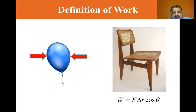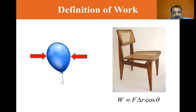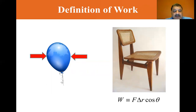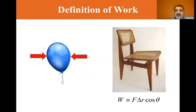That displacement is the one to be used in the equation. Now, to illustrate the distinction between the physics definition of work and our everyday understanding: consider holding a heavy chair at arm's length for three minutes. Even though your arms may be tired, according to the physics definition, zero work is done on it. You exert a force to support the chair, but you do not move it. A force does no work on an object if the force does not move it through a displacement — if delta R equals zero, then the work equals zero.